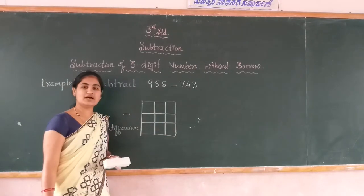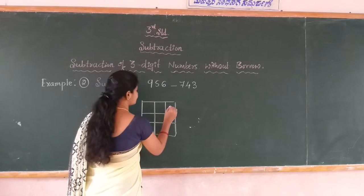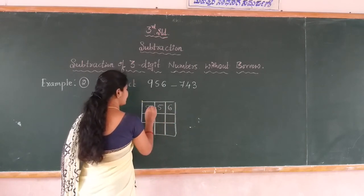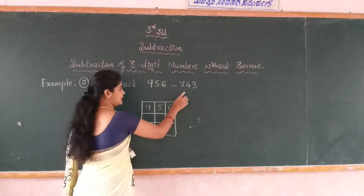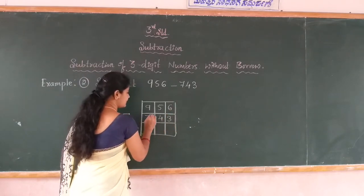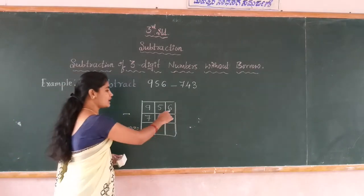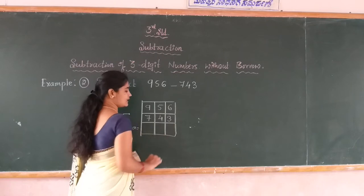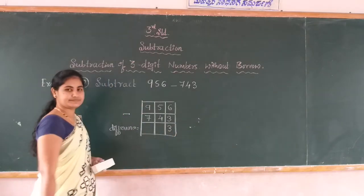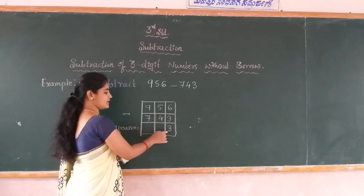You start the subtraction from the ones place. Write the numbers with respect to place values: 6 is in ones, 5 is in tens, and 9 is in hundreds. Below: 3 is in ones, 4 is in tens, and 7 is in hundreds. Start the subtraction from the ones place: 6 minus 3 is 3.